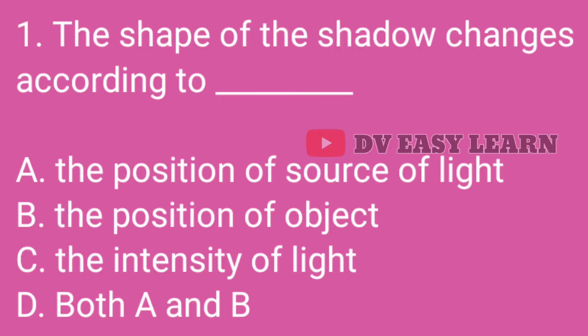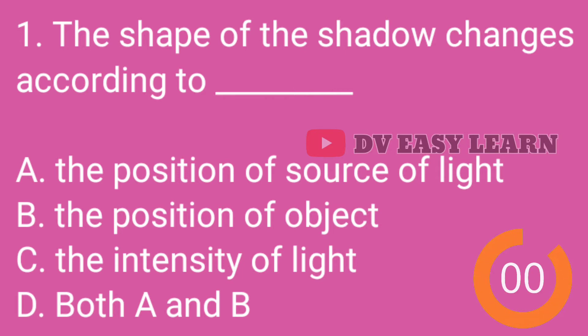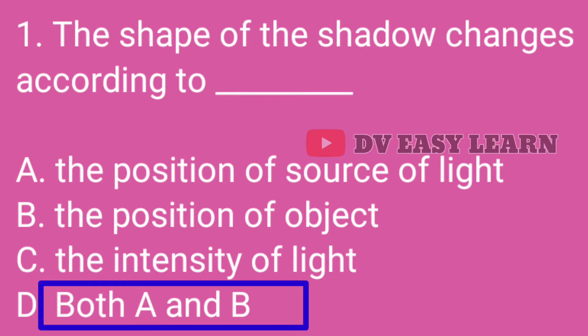Question No. 1: The shape of the shadow changes according to — Correct answer: Both A and B — the position of the source of light and the position of the object.